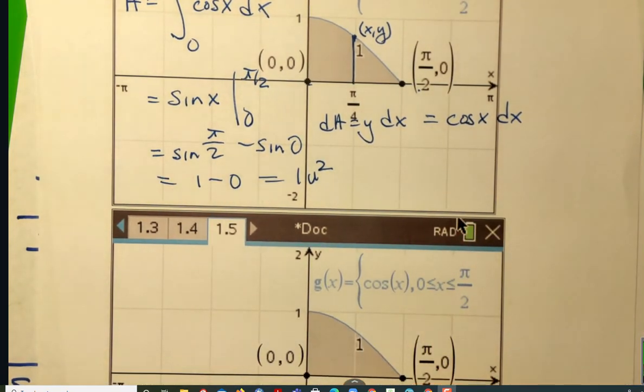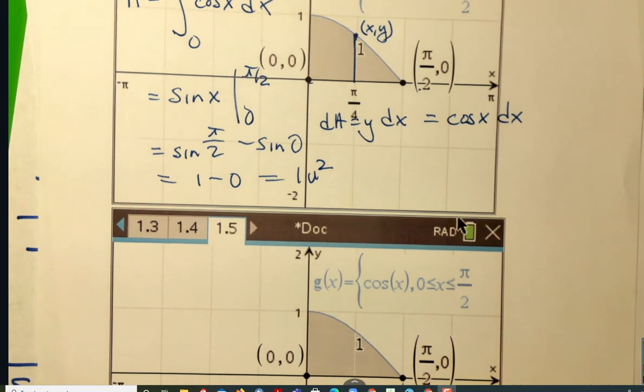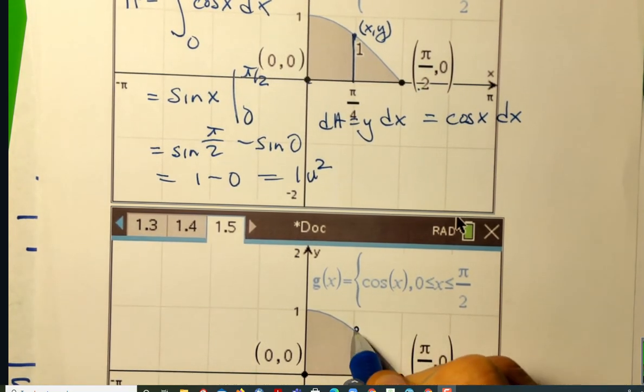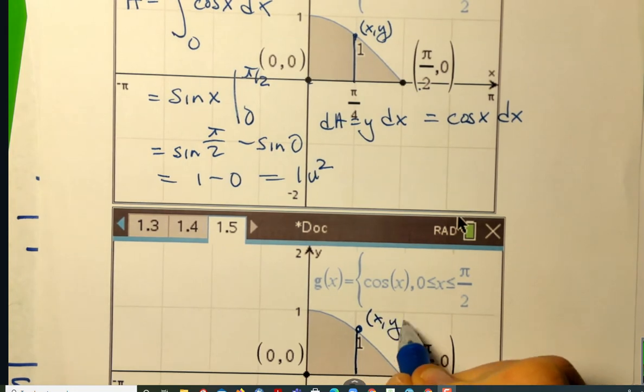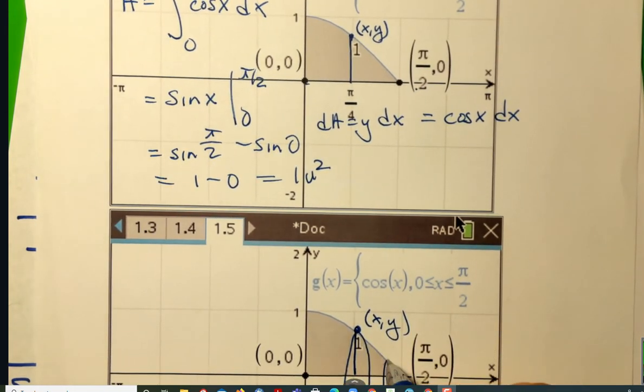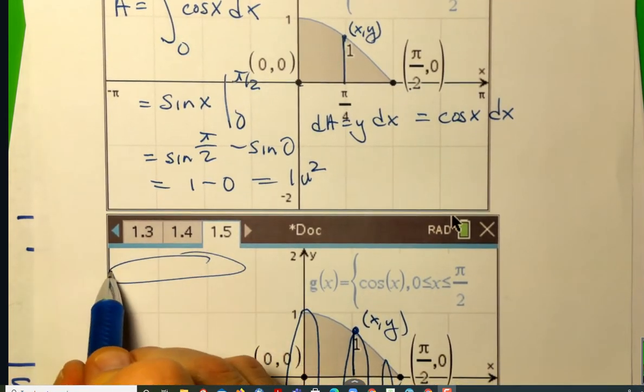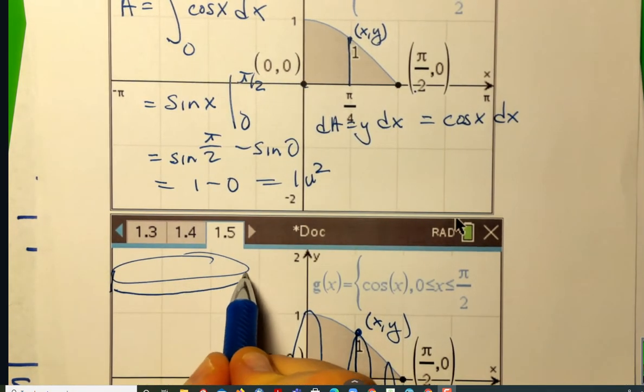Now, let's revolve this region, sketch the reflected region, do the best you can. Put in a sample. When you revolve this, I hope you can see you're getting little cylinders. They're going to call them disks. This is the method of disk because the cross section is a circle.